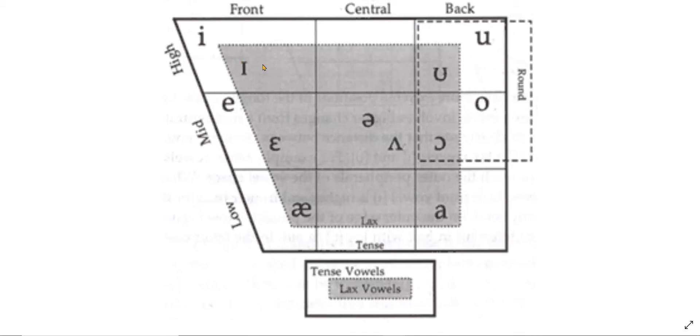You have one, two, three, four, five, six, seven, eight, nine, ten, eleven, twelve. We actually have twelve different vowel sounds in the English language in American English.